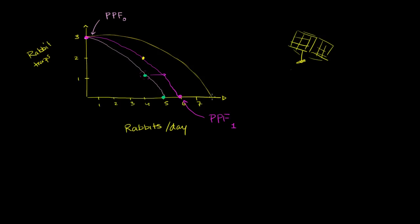Now, if he wanted to devote himself purely to rabbit trapping, he can get eight rabbits a day, or do some combination in between. This curve shouldn't go up and then down — it just goes something like this. This is production possibilities frontier two — PPF₂.